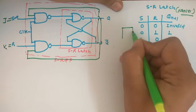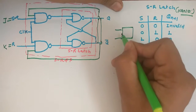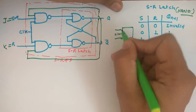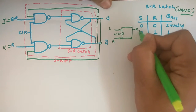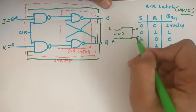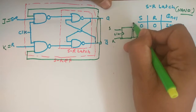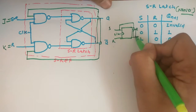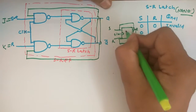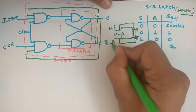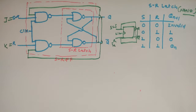If you want to represent it as a block, you can take one block — this is clock, this is S, and this is R — so this is SR flip-flop. Now I am going to connect this terminal at S and this terminal at J, so this becomes JK flip-flop where S is equal to J and R is equal to K. This is nothing but JK flip-flop. So how will it work?